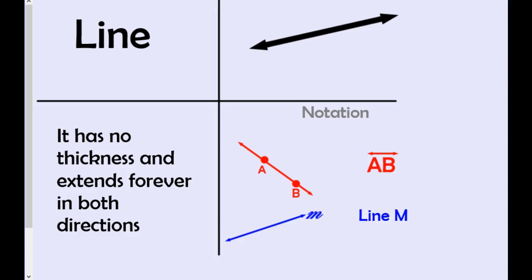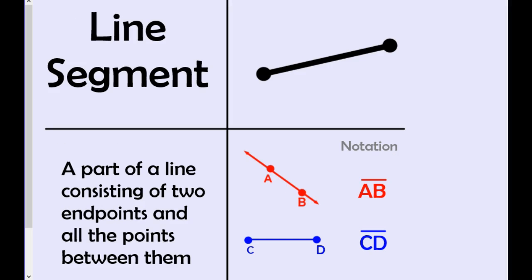The line has arrowheads on both sides, which extends forever. And the ray has one arrowhead. The line segment has no arrowheads. Those are the three points.